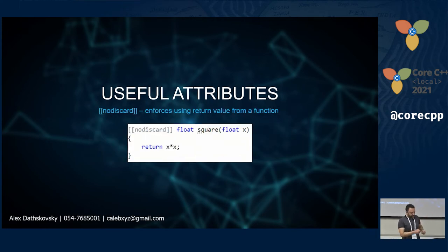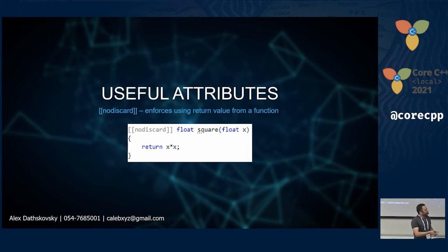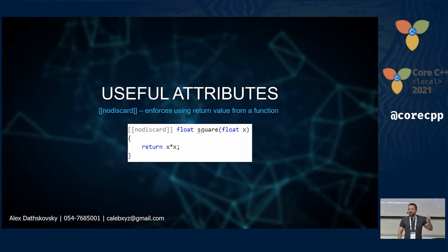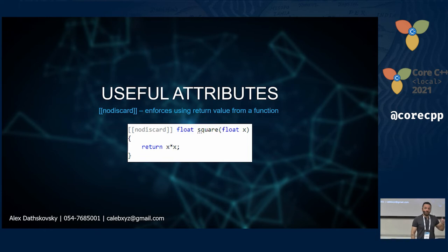The second attribute is nodiscard, which is the opposite of maybe_unused. If a function is marked nodiscard, its return value must always be used — the warning becomes an actual error and the code won't compile if you discard the return value.